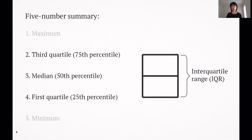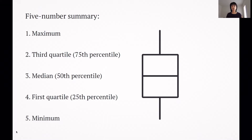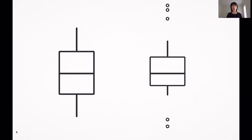Next, we connect these lines with the median to form the box portion of the box plot. The box shows what is called the interquartile range, or the distance between the first and third quartiles. Finally, we draw one line from the first quartile to the minimum and another from the third quartile to the maximum — these are the whiskers.